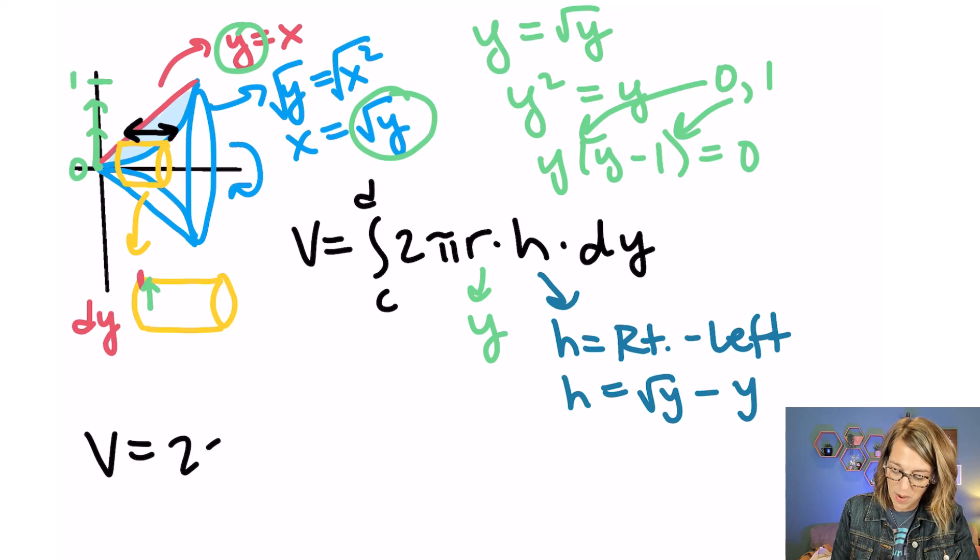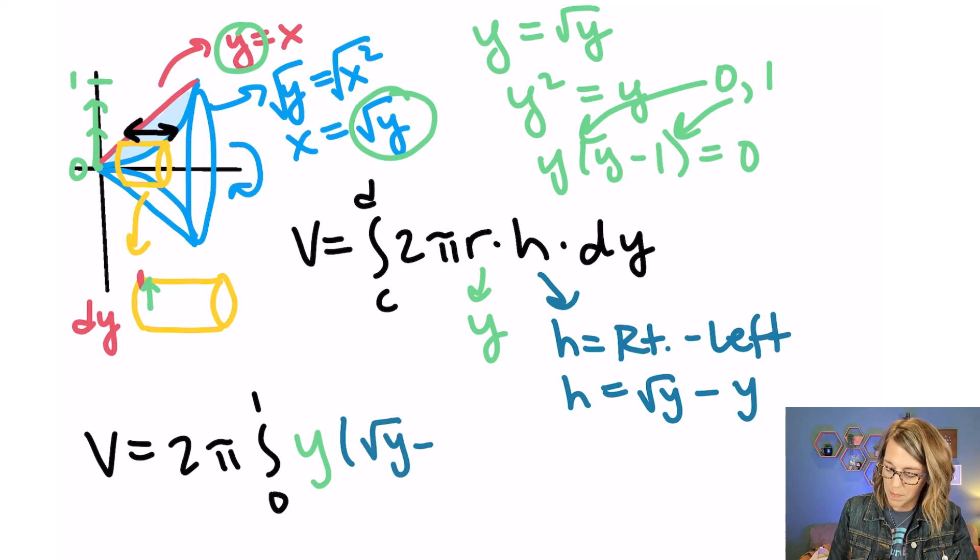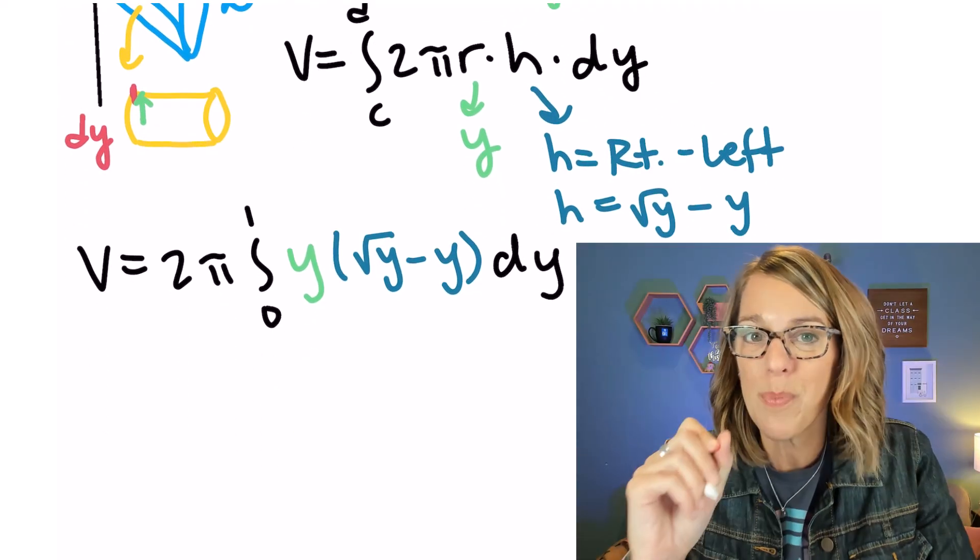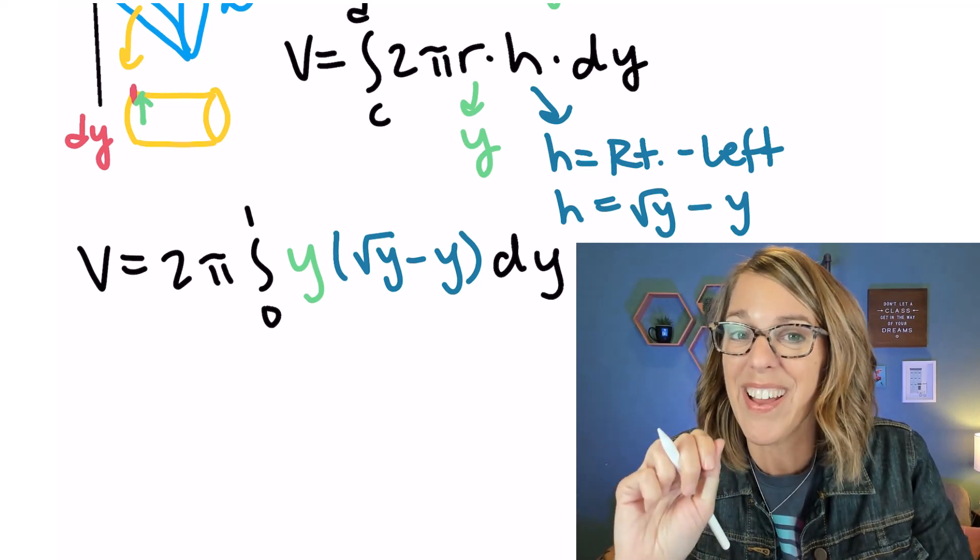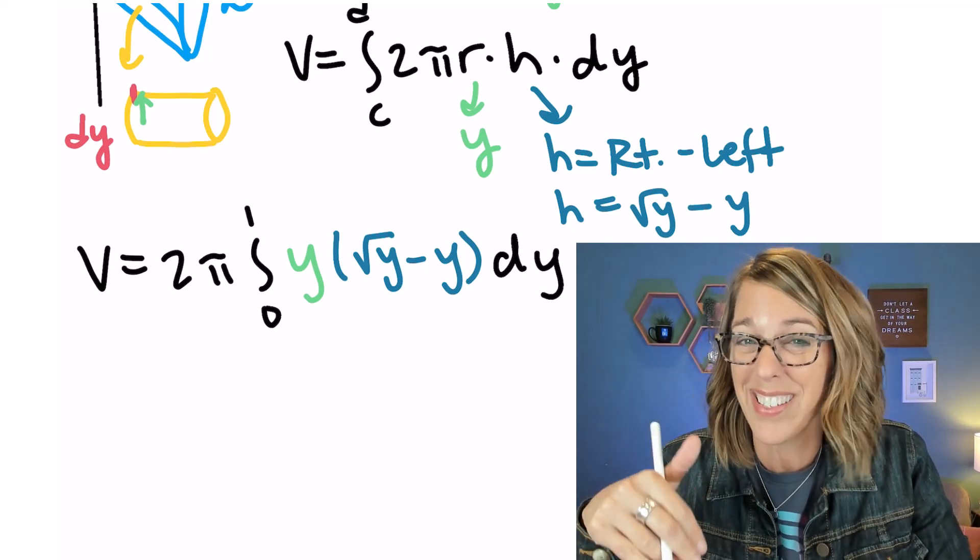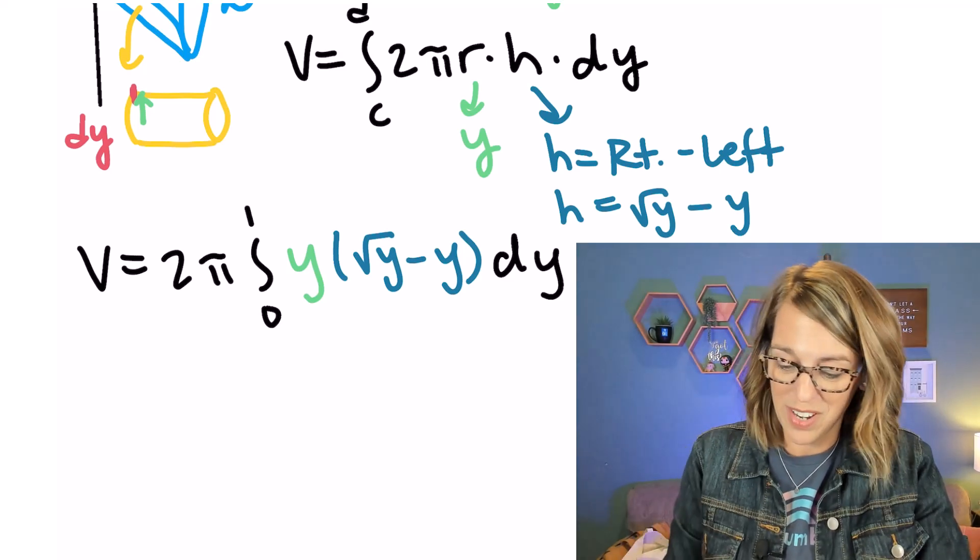I can factor that 2π out in front and I'm going to do that. My limits of integration go from 0 to 1 and then I've got that r is equal to y and then that height was the square root of y minus y and I have my dy on the end. Now if you're feeling super confident with your calc skills, go ahead and fast forward to the end. I'll give you the answer. Otherwise, this is a really nice one to work through. Let's go ahead and finish it.